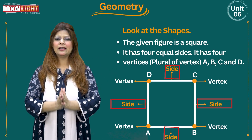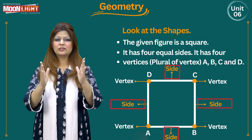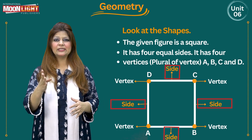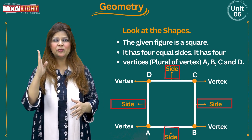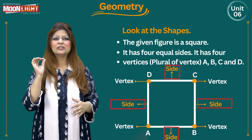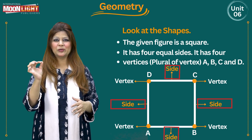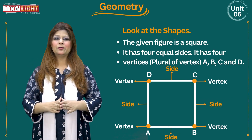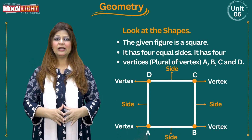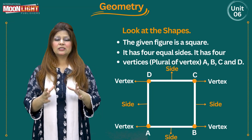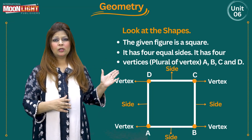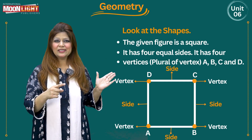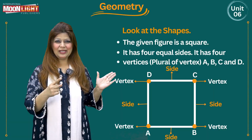So for the square, we have four sides and four vertices — that means four corners. So right now we are going to say that this is the plural of vertex.